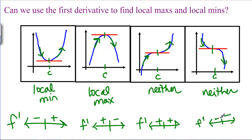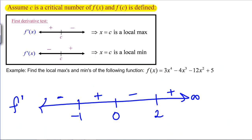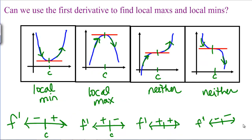What this is telling us is: if our F-prime number line goes from a negative F-prime to a positive F-prime with a critical point in between, that's a local min. If it goes from positive to negative across the critical point C, that's a local max. If it doesn't change signs, then that's neither a local max nor a local min.